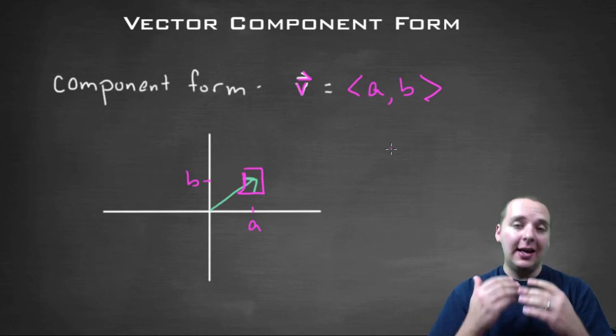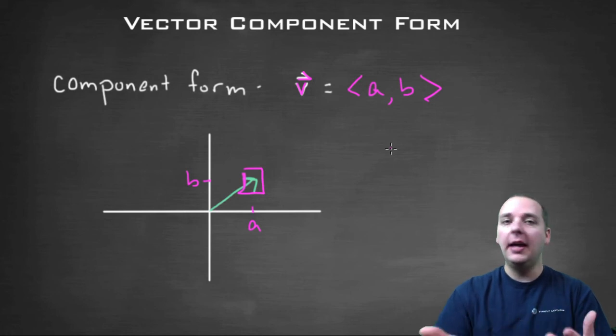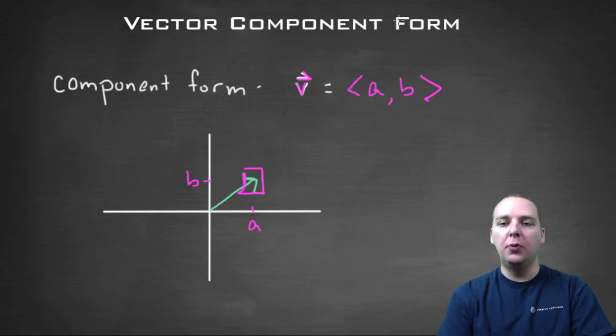that we assume has the initial point zero, zero, that's implied, because we're using component form, and a terminal point of a comma b. So it makes it very easy to represent vectors using this form.